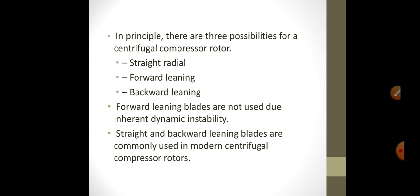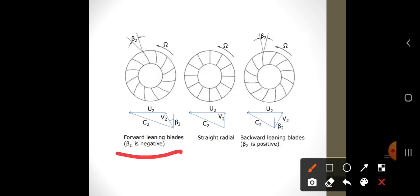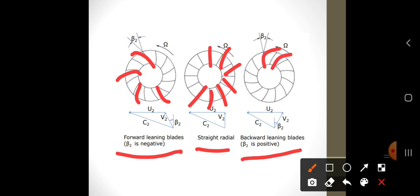Straight and backward leaning blades are commonly used in modern centrifugal compressors. Here we can see a forward leaning blade, straight radial blade, and backward leaning blade. The blades are inclined in forward direction, straight in radial, or backward leaning. We have absolute velocity, relative velocity, and blade rotating velocity. C represents absolute velocity, V represents relative velocity, and U represents rotational speed of the blade.